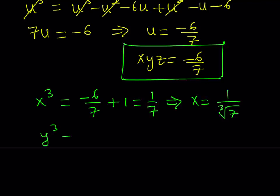And then you do the same thing for y. You get y cubed is equal to negative 6 over 7 plus 2. That's 14. So that's going to give me 8 over 7. Even if you cube root both sides, you get 2 over cube root of 7.